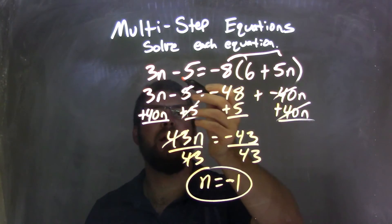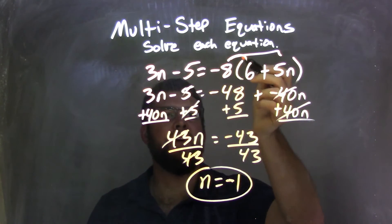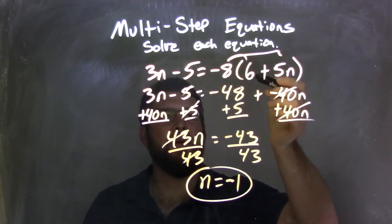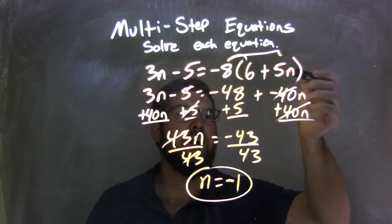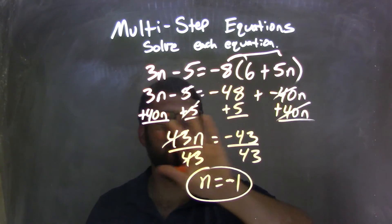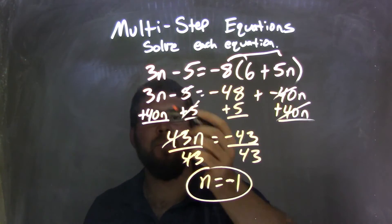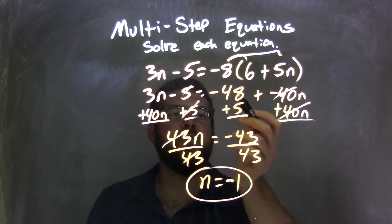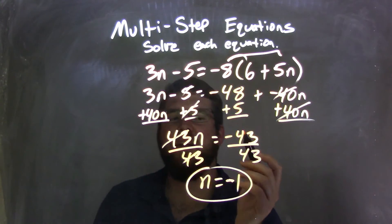So let's recap. We started with 3n minus 5 equals negative 8 times the quantity 6 plus 5n. I distributed the negative 8 across: negative 8 times 6 is negative 48, and negative 8 times 5n is negative 40n. I then brought my like terms to each side, bringing the n's to the left and numbers to the right. I added 40n, giving me 3n plus 40n, which is 43n, and then negative 48 plus 5 is negative 43.